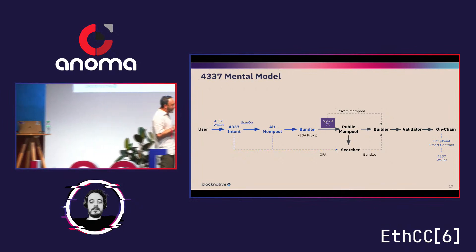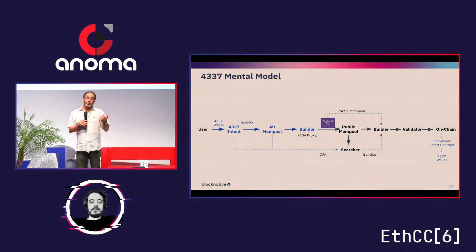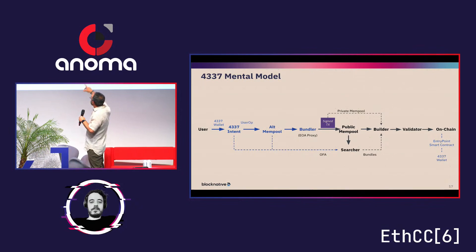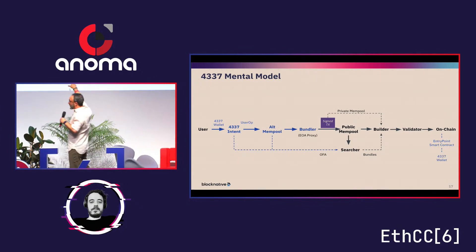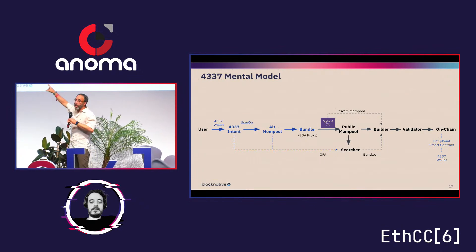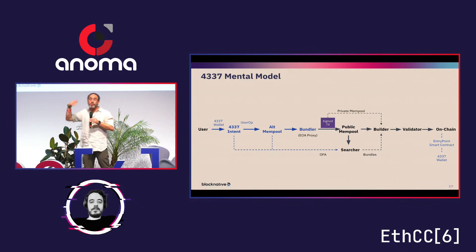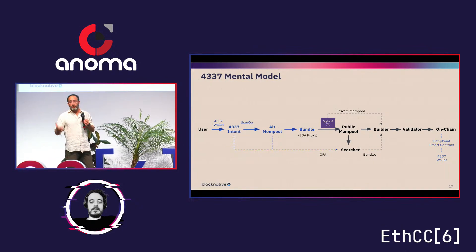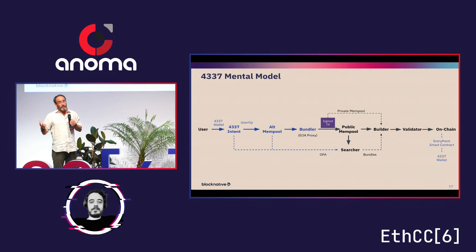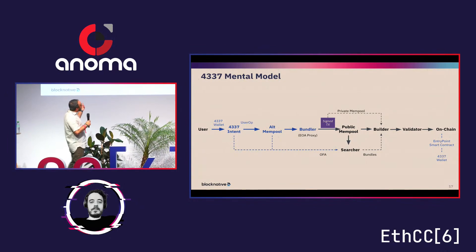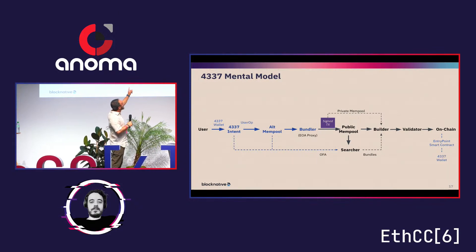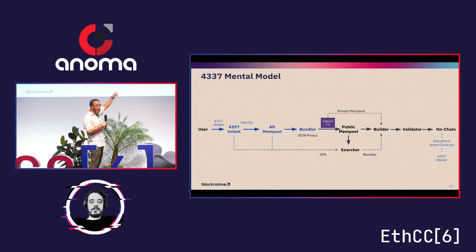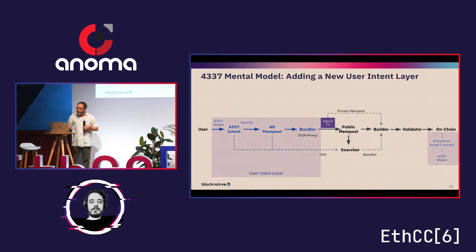MEV stands for maximal extractable value — the value you can get by controlling the contents of blocks through inclusion, exclusion, and ordering. Historically, MEV is controlled at the builder level, but now you have this new actor called the bundler who determines the contents of bundled transactions out of the alt mempool. The alt mempool and bundlers represent a new source of MEV. Bundlers submit transactions to the mempool, and those may be subsequently reordered by searchers and builders — so there's MEV at the user intent layer and MEV at the EOA layer.